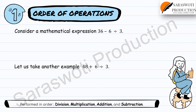Therefore, in the expression 36 minus 6 divided by 3, as per the convention, the operation of division should be performed before subtraction. Hence 6 divided by 3 equals 2, and then 36 minus 2 is equal to 34. In the second expression 48 plus 6 divided by 3, division is performed first: 6 divided by 3 equals 2, and then 48 plus 2 is equal to 50.